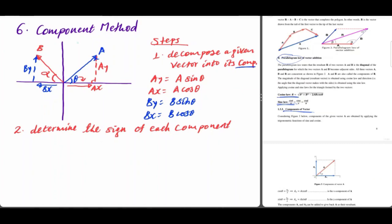The first quadrant, the second quadrant, the third quadrant, and the fourth quadrant. In the first quadrant, both x and y components are positive. In the second quadrant, the x component is negative and the y component is positive. In the third quadrant, the y component is negative.